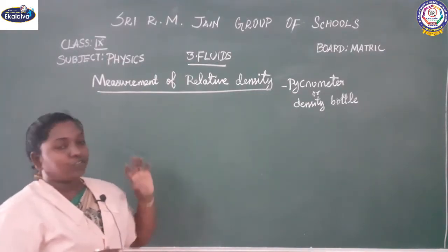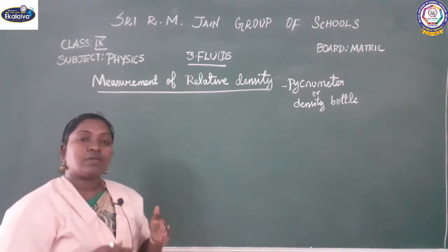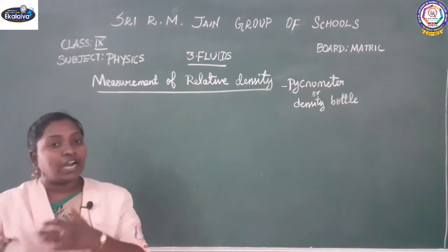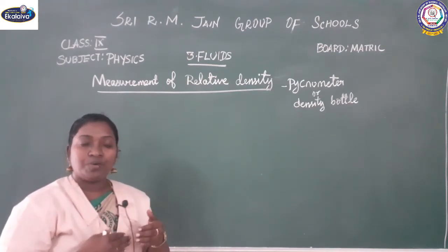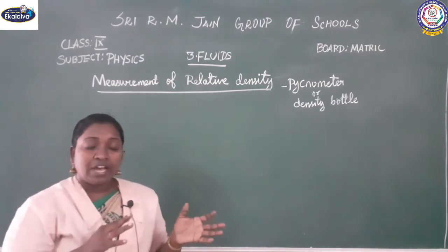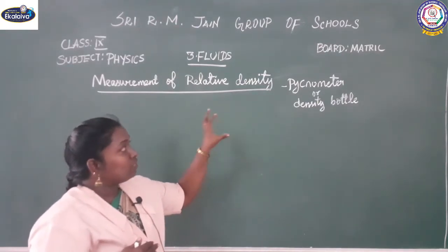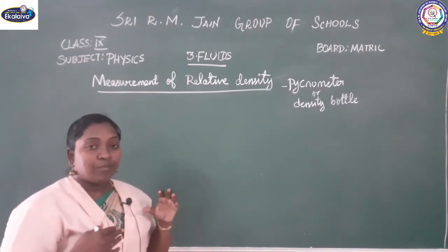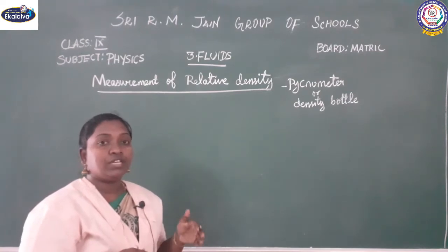To find relative density, according to the formula we need to know the mass of a substance and compare it with the volume. Mass divided by volume gives you the density of a substance. Using this pycnometer instrument, it makes the process easier and gives you the reading exactly.